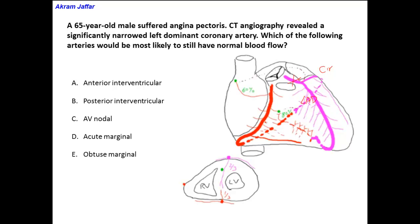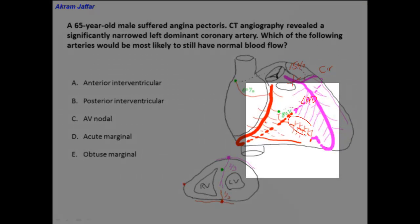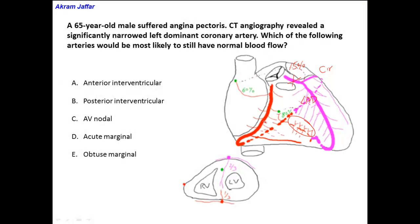Now let's remember the dominance of the coronary arteries. The right coronary artery is dominant in about 67% of cases, and it's only in about 15% of cases that the left coronary artery is dominant. By dominance, it means that it provides the origin of the posterior interventricular artery. In those 15% of cases, the posterior interventricular artery originates from the circumflex branch of the left coronary artery.